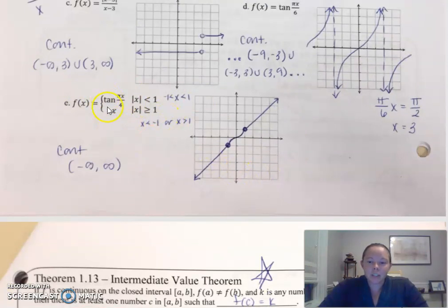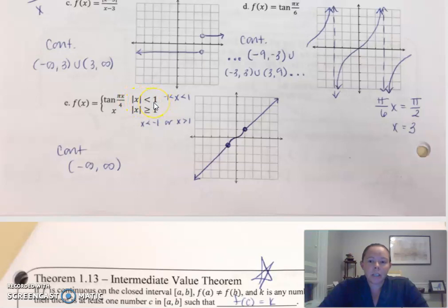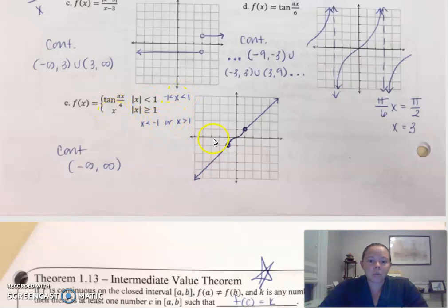For this piecewise function, it has a kind of cute graph — it's a line everywhere except this middle space here. The notation absolute value of x minus one is less than one actually means x is between negative one and one. Remember the GOLA trick: if it's less than, it's 'and', so it's between. If it's greater than, it's 'or'. So this was graphed where x is less than negative one or greater than one for those two outer parts. You might see this notation and have to pull from those algebra skills.